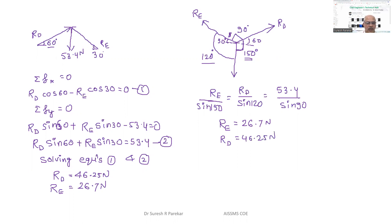Let me just verify: 53.4 × sin 150 = 26.7, and sin 120 × 53.4 = 46.25 Newtons. You can use Lamy's theorem, but be very careful with it. Otherwise you can use equilibrium equations ΣFx = 0 and ΣFy = 0.